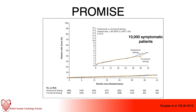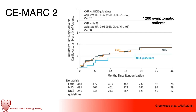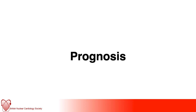Looking at more recent data supporting MPS: the PROMISE trial looked at 10,000 symptomatic patients randomised to anatomical or functional imaging, and there was no improvement in clinical outcome using one modality over another over a median follow-up of two years. The CE-MARC II trial — the later iteration — looked at 1,200 symptomatic patients and found that those investigated by cardiac MRI or MPS both had lower rates of unnecessary invasive coronary angiography within 12 months compared to NICE guideline-directed care. Reassuringly, there was no difference in major adverse cardiovascular events — cardiovascular death or MI — between the cardiac MRI and MPS groups.